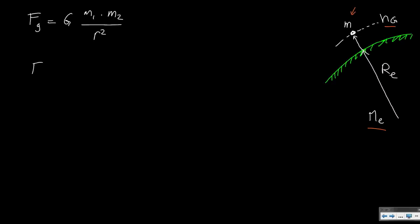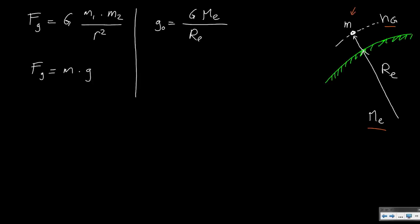We always write Fg equals m times our gravity constant, for instance at sea level. So g0 basically becomes the mass of the earth times the gravity constant divided by Re squared. While at altitude, g becomes the same with the mass, but then divided by the radius of the earth plus the geometric altitude, squared.